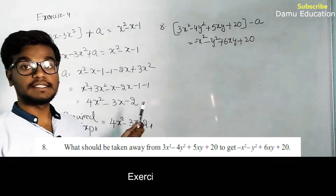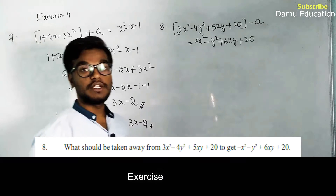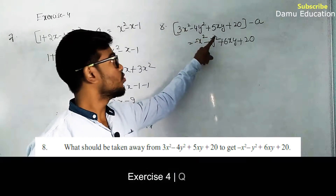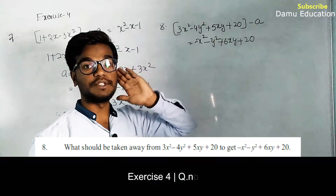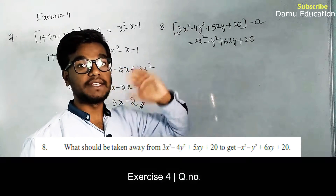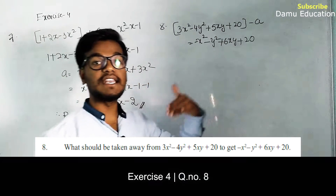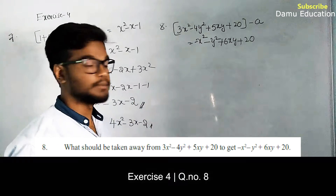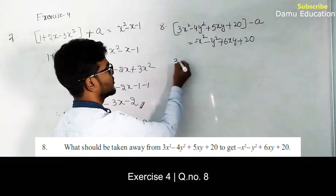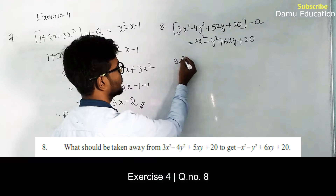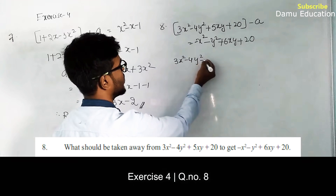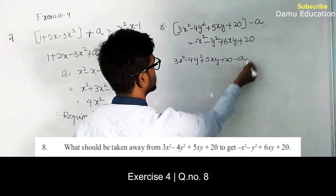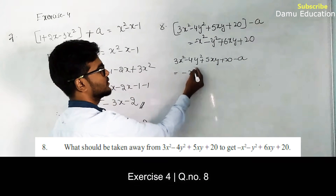Our next question is: what should be taken away from 3x² - 4y² + 5xy + 20 in order to get the remaining expression? 'Taken away' means we need to do subtraction. So: 3x² - 4y² + 5xy + 20 - a = -x² - y² + 6xy + 20.